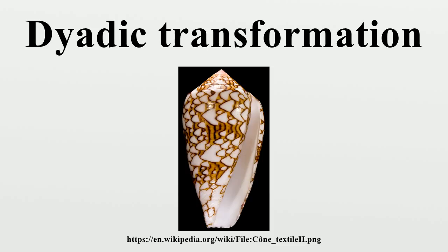The dyadic transformation provides an example of how a simple one-dimensional map can give rise to chaos. The dyadic transformation is topologically conjugate to the unit-height tent map. The chaotic R equals 4 case of the logistic map is related to the bit shift map in variable x by a semi-conjugacy between the dyadic transformation and the quadratic polynomial.